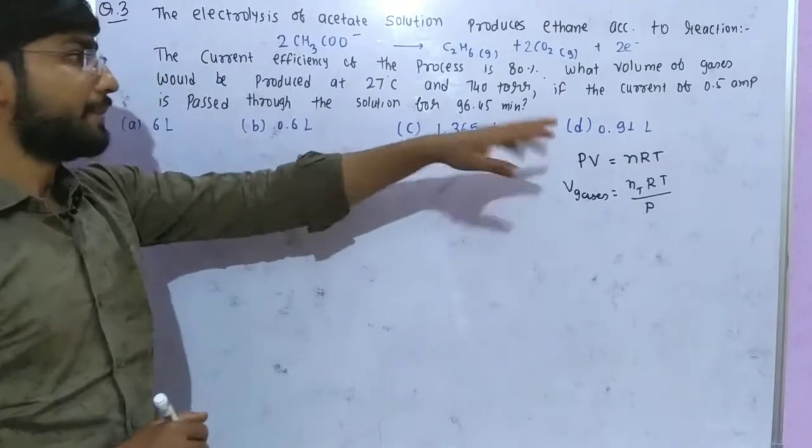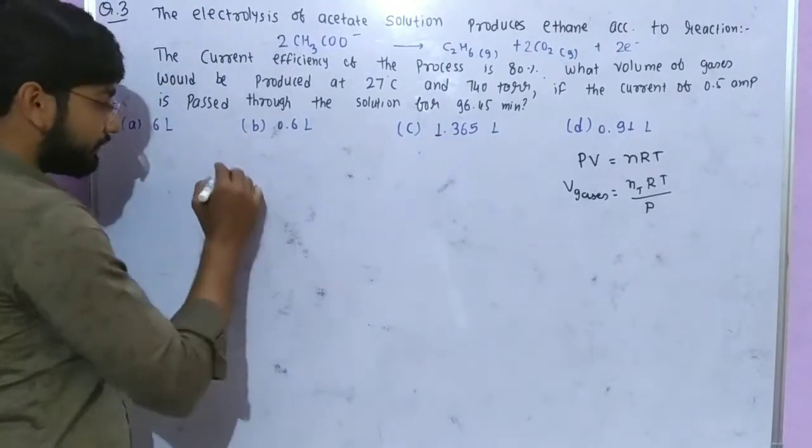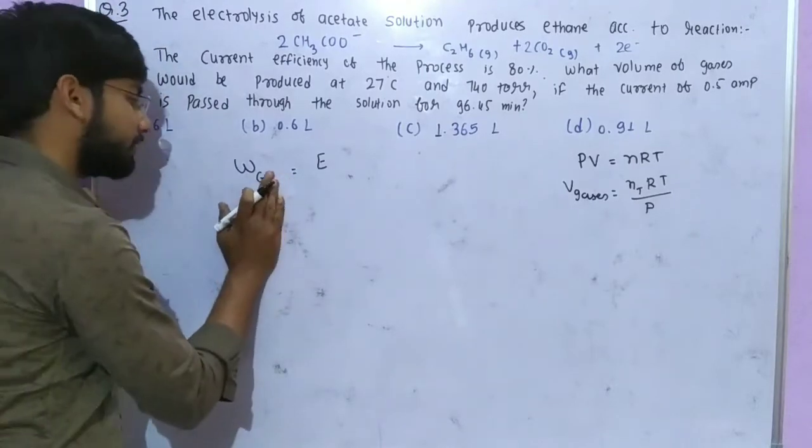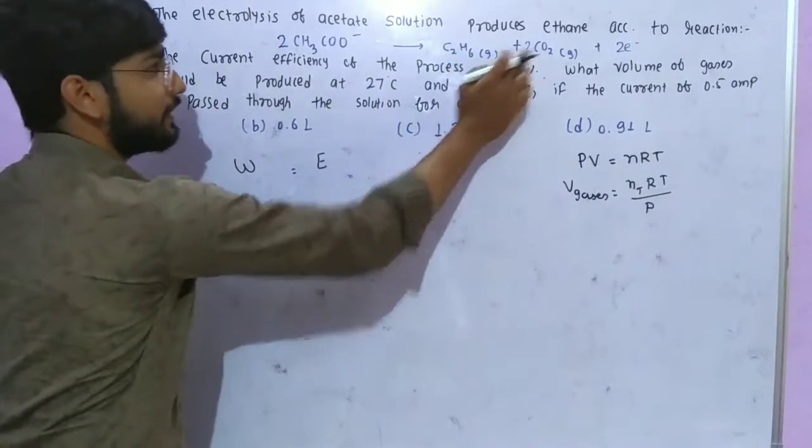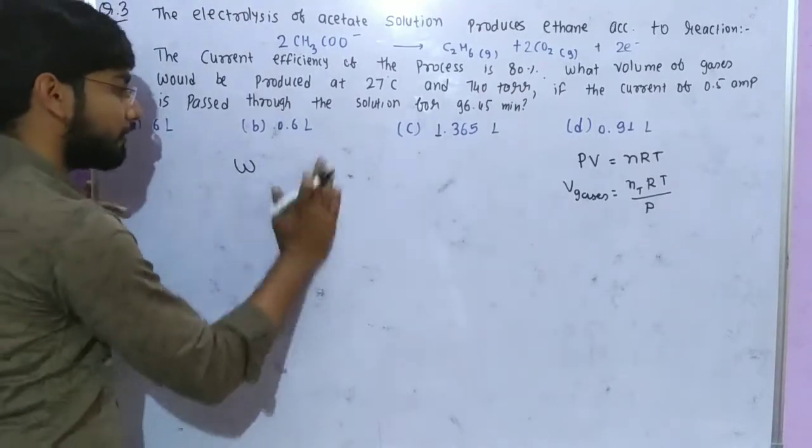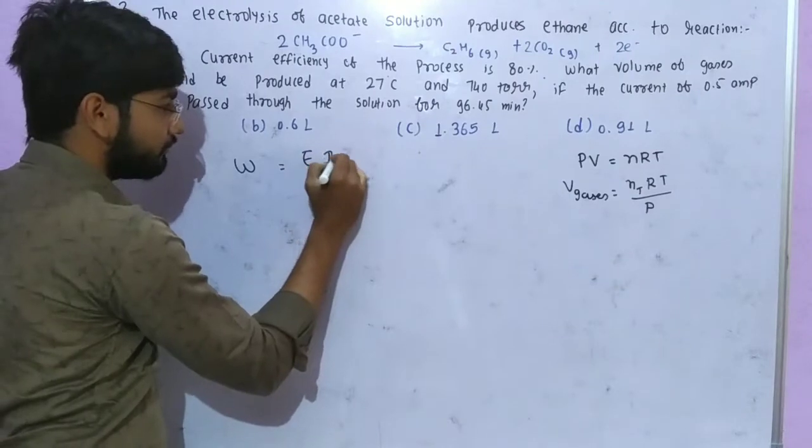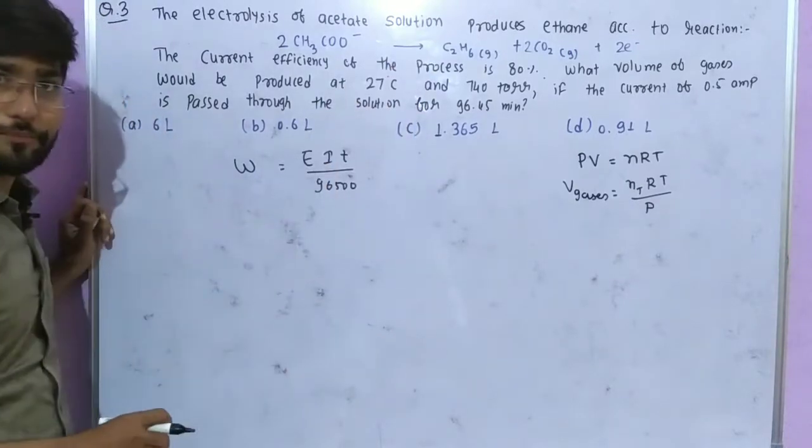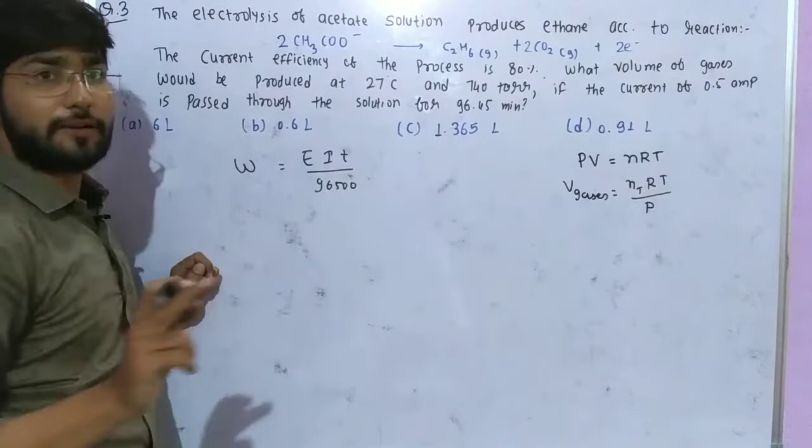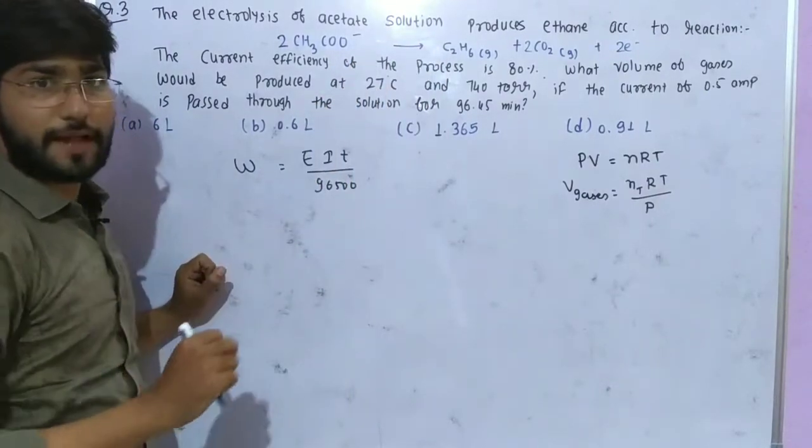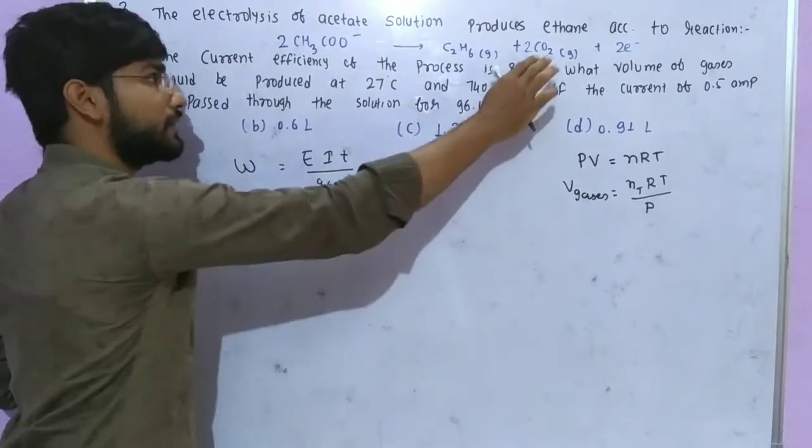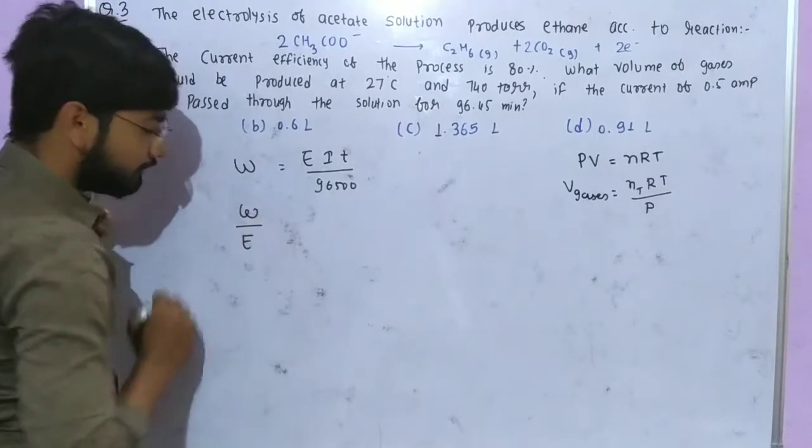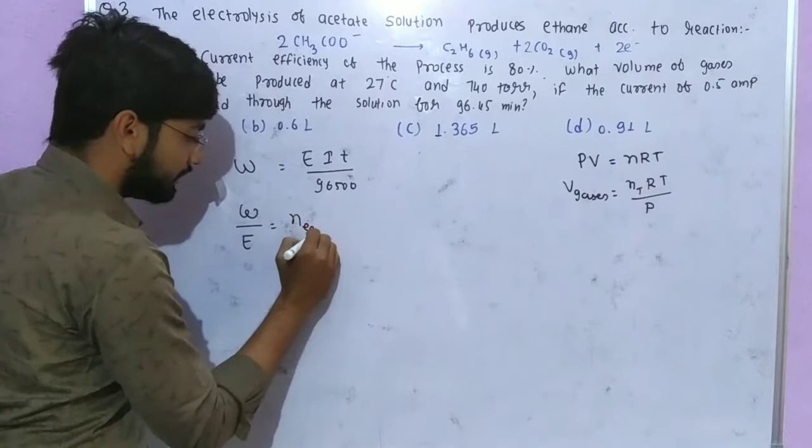For reduction we have to apply Faraday's first law. The formula gives the total weight of gases. The weight is equal to equivalent weight times I times T divided by 96500. Now we need to calculate the equivalent weight. The formula is weight divided by equivalent weight gives number of equivalents.